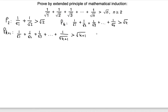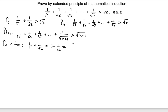Now we have to show that P(2) is true. We verify: 1/√1 is 1/1 = 1, and 1/√2 we can leave alone. So the left side is 1 + 1/√2, which we can combine into a single fraction: (√2 + 1)/√2.